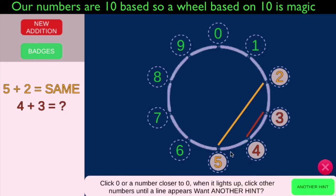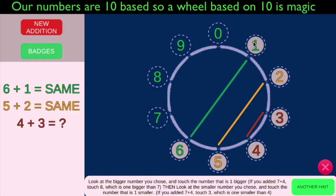Let's do that again. One bigger than five is six, and one smaller than two is one. And you see where we're actually moving toward zero here. And when we get to zero, that's when it's going to be special.